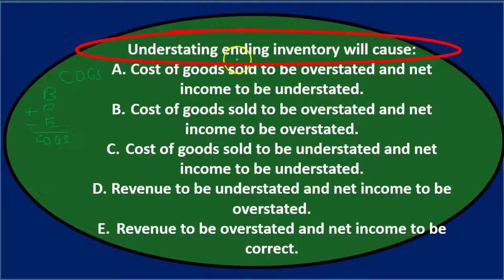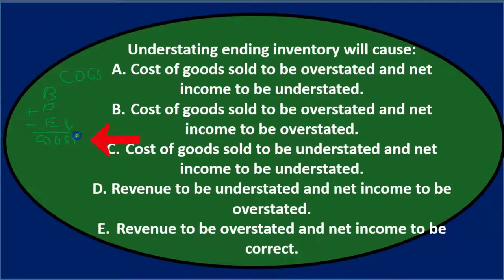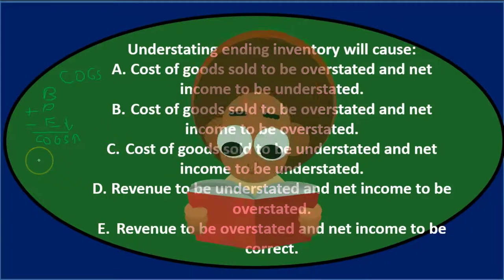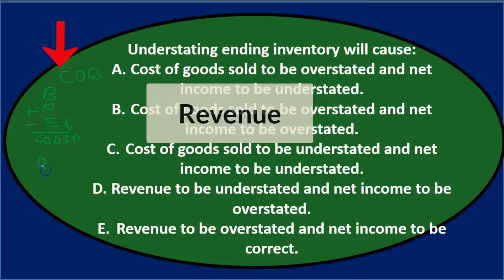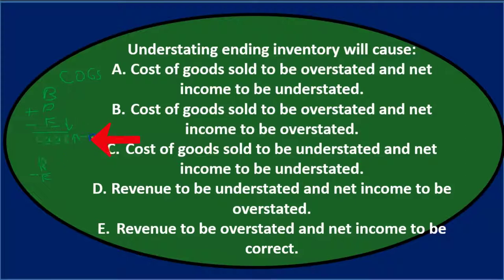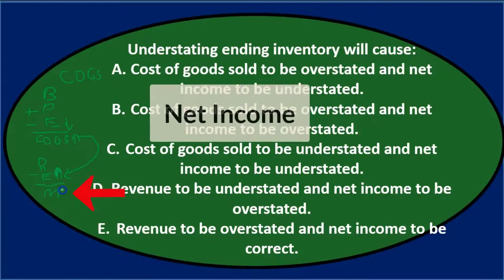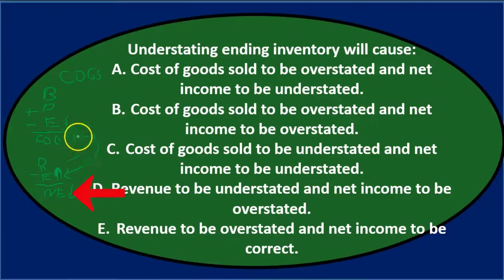Ending inventory is understated — too low. So beginning inventory plus purchases is what it is, minus an ending inventory that is too low, causing cost of goods sold to be too high. Then since net income equals revenue minus expenses, and cost of goods sold is an expense that is too high, net income will be too low. So cost of goods sold is overstated and net income is understated.